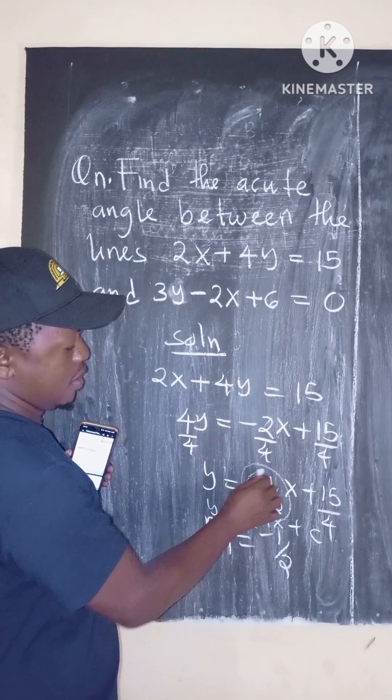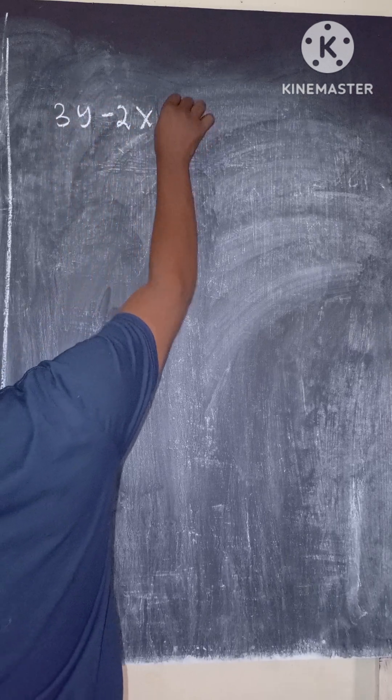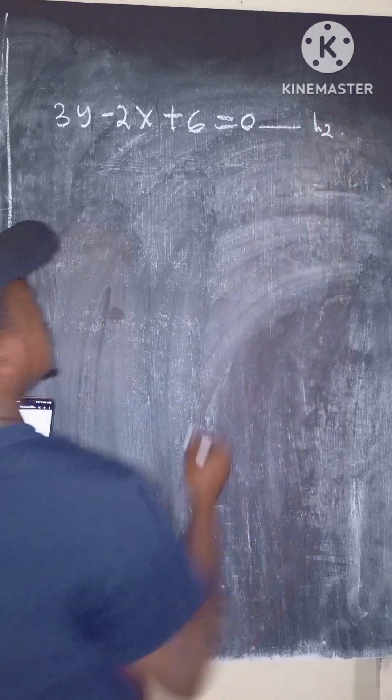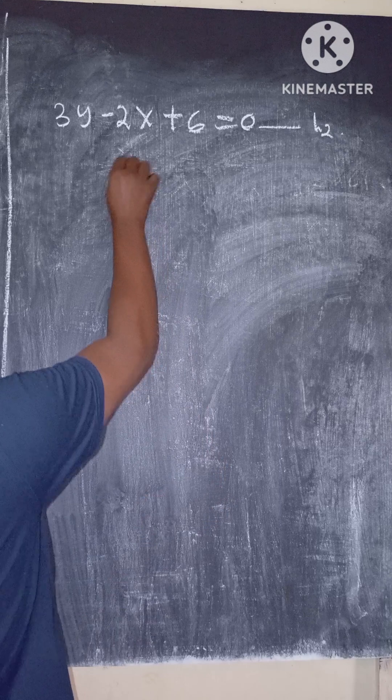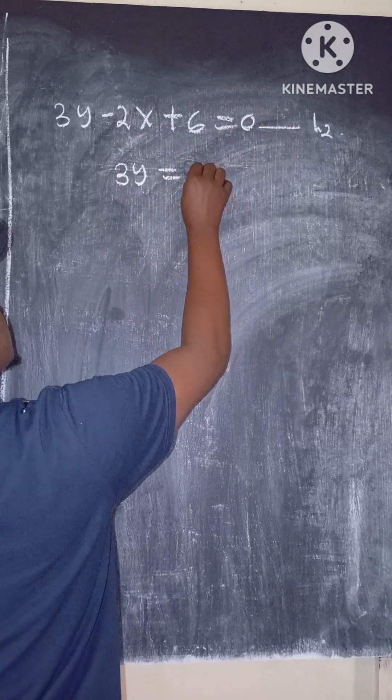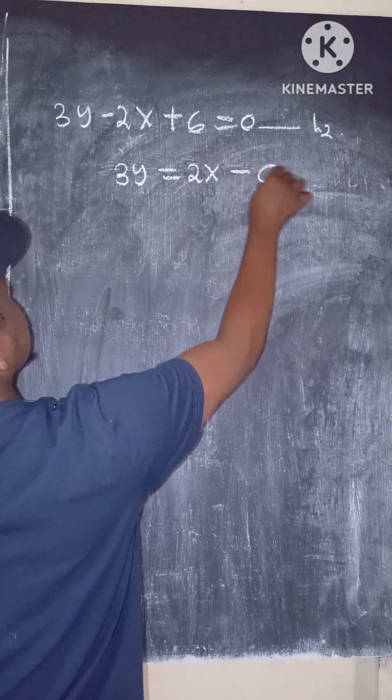For the second equation, 3y minus 2x plus 6 equals 0. We call this line 2. Make y the subject. We have 3y equals 2x minus 6.